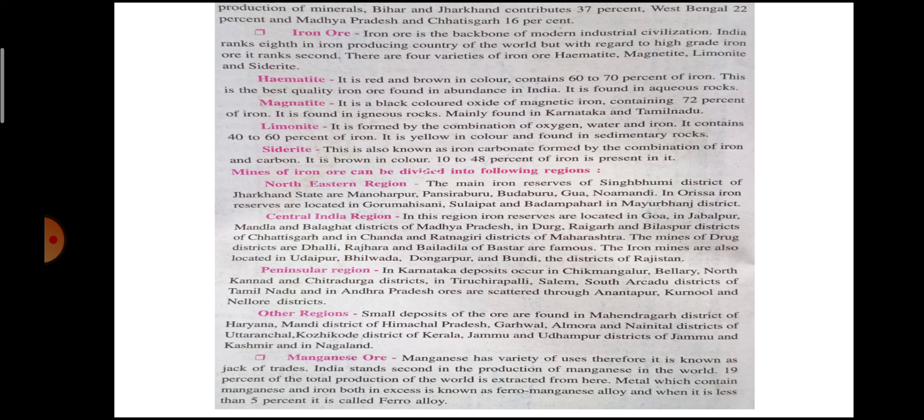Magnetite is a black-colored oxide of iron, containing 72% iron. It is found in igneous rocks and is mainly found in Karnataka and Tamil Nadu.